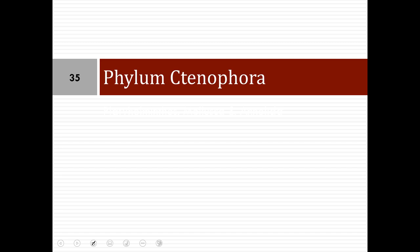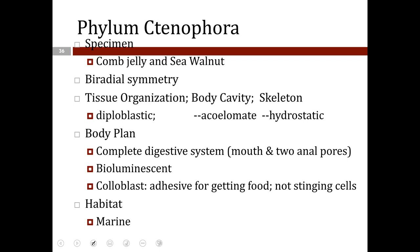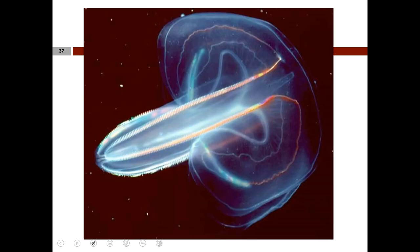Next up is Phylum Ctenophora. Examples include comb jellyfishes and the sea walnut. They exhibit biradial symmetry and are diploblastic acoelomates with a hydrostatic skeleton. They have a complete digestive system with a mouth and two anal pores. They exhibit bioluminescence and have colloblasts — adhesive cells (not stinging cells) that allow them to capture food. They are marine animals.